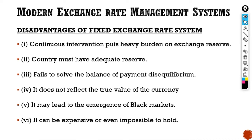Now with advantages there are also disadvantages. Disadvantage number one: continuous intervention is a heavy burden on exchange rate reserves. The central bank needs huge reserves of foreign exchange in order to intervene, so continuously intervening puts a lot of burden on exchange reserves. Second: the country must have adequate reserves — if the central bank needs to intervene continuously, it will require a huge amount of foreign reserve, which will turn out to be a burden for the country.